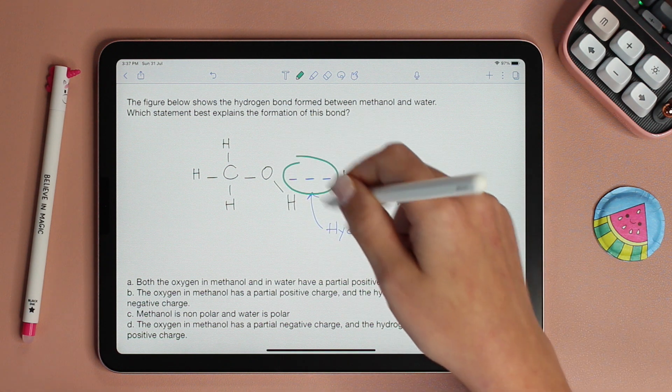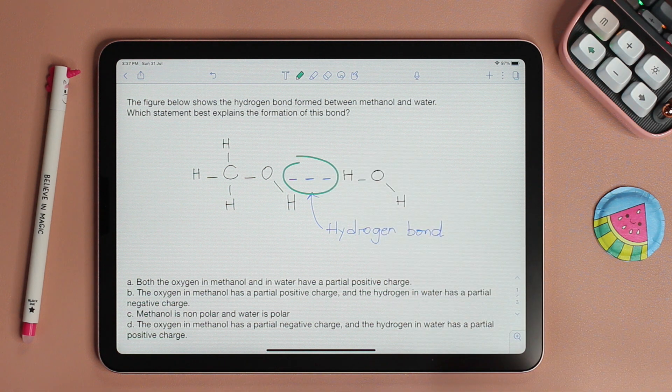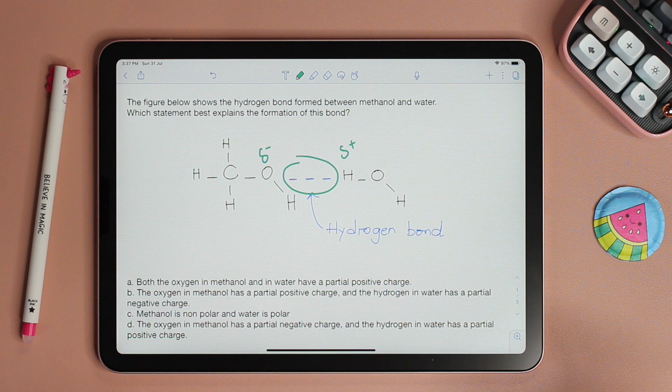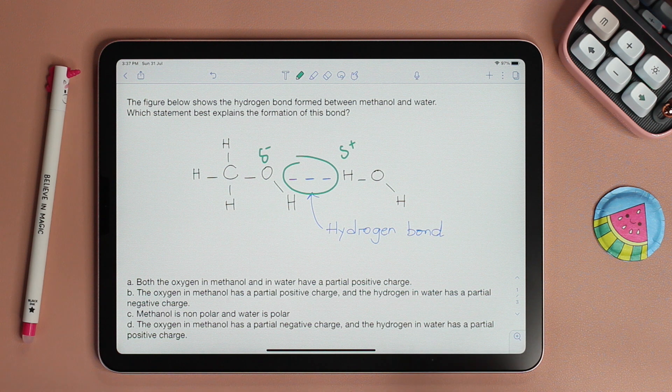We know that a hydrogen bond always forms between a delta negative and a delta positive atom. So let's look at which choice best explains that.